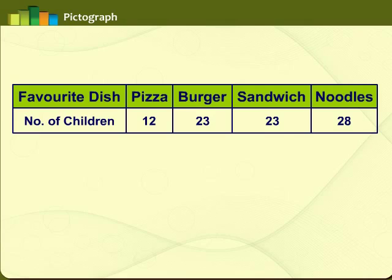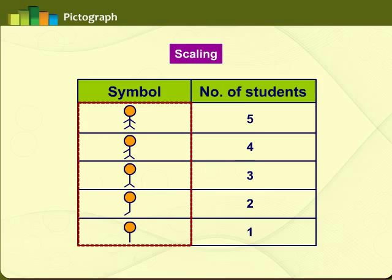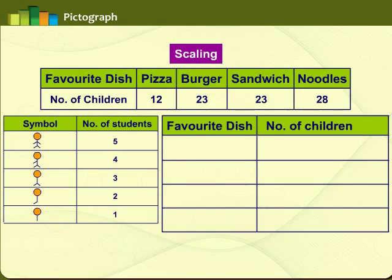Similarly, we can easily get more information by observing a picture graph. Now let us see how to represent data in a pictograph. Is it reasonable to use one symbol for each unit when numbers are large? No. In such cases we assume that one symbol represents a particular number, like five children. This method of assuming a symbol to represent a particular number is called scaling. Generally we use a scale factor that is the greatest common divisor of all frequencies.